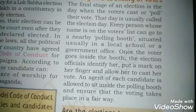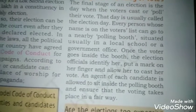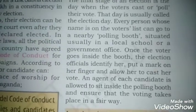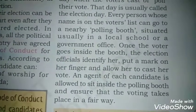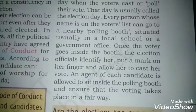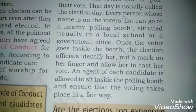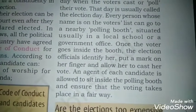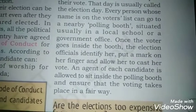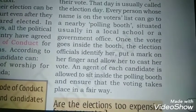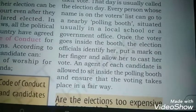Once the voter goes inside the booth, the election officer identifies her, puts a mark on her finger, and allows her to cast her vote. An agent of each candidate is allowed to sit inside the polling booth to ensure that voting takes place in a fair way.